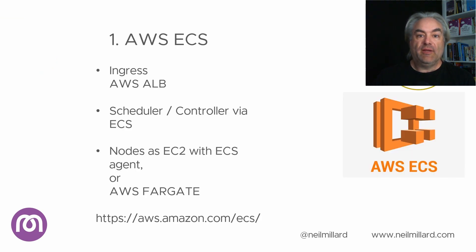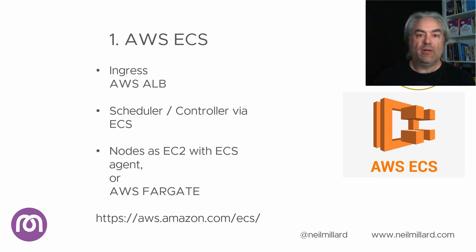Number one is AWS ECS — Elastic Container Service. This is a backplane-type service that Amazon provides, and it gives you the ability to specify an ingress, although that is also another Amazon product: the load balancer. ECS handles the internal plumbing between the load balancer and the actual containers running the workloads. It also provides the scheduler. If you're looking for a serverless approach, Fargate can be specified as a destination, in which case your containers run on the Fargate service Amazon provides. The alternative is EC2, where you provide your own individual nodes and the scheduler decides which node is best.